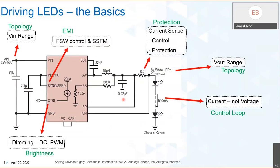Looking at a simple LED driving circuit: you have LEDs in series on the right — in this case driven at 500 milliamps. The first thing to consider when selecting an LED driver is the output voltage and input voltage. The output voltage is mainly determined by the number of LEDs in series: X times VF equals the maximum output voltage. If the input is higher you step down, if lower you step up, and if it can be either, you need a buck-boost topology. VIN versus VOUT determines the topology — that's key in selecting an LED driver.